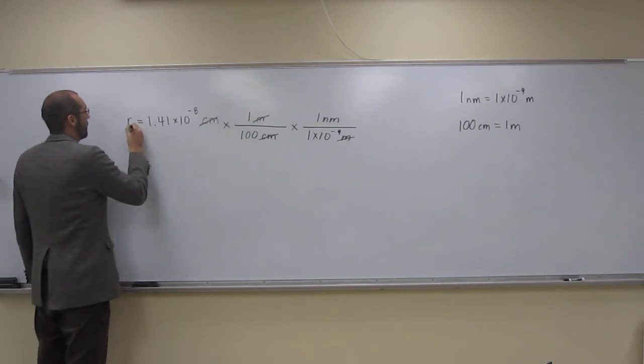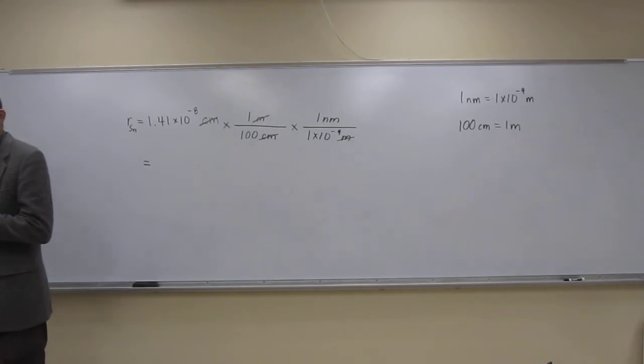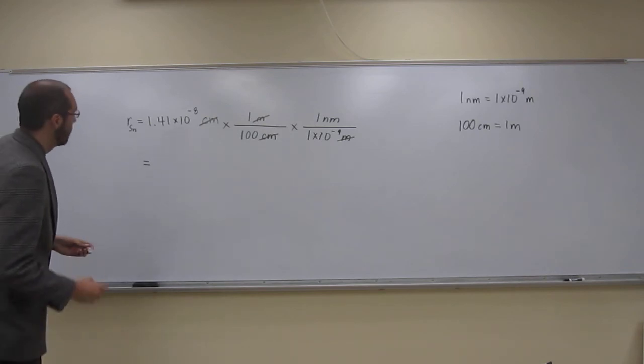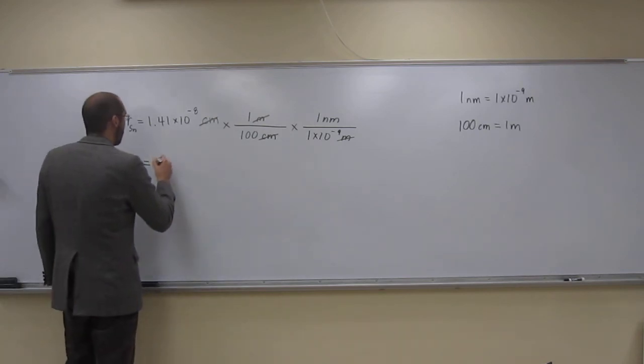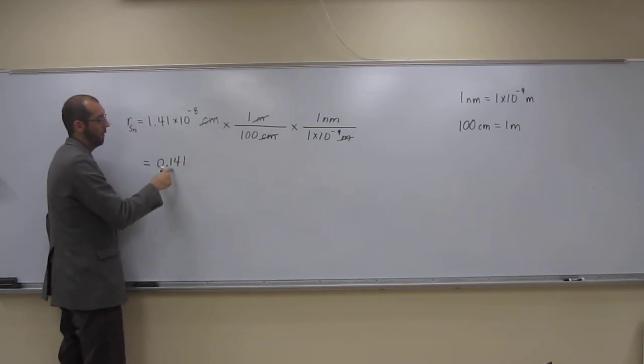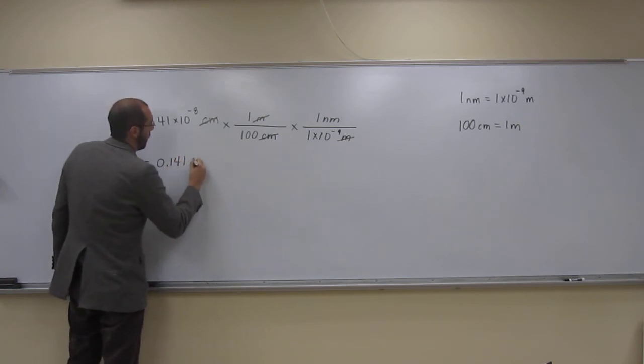So the radius of the tin atom is going to be, let's try it together. So 1.41 E negative 8, divide that number by 100, and then divide that number by 1 E negative 9. And then we should get a more reasonable number, 0.141 nanometers.